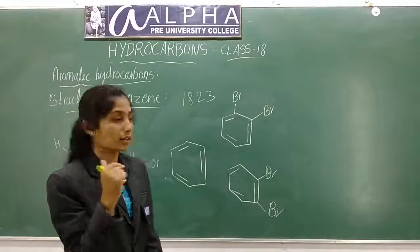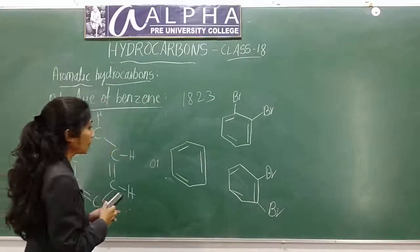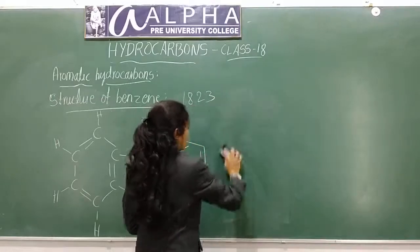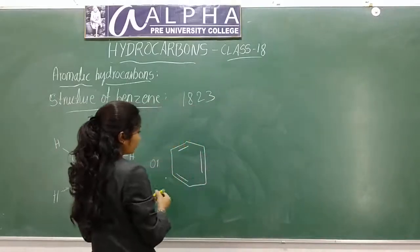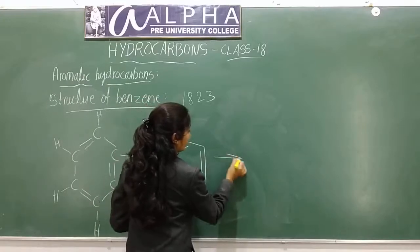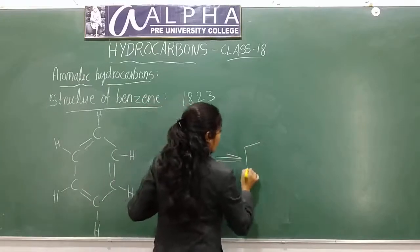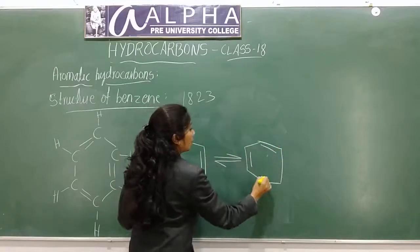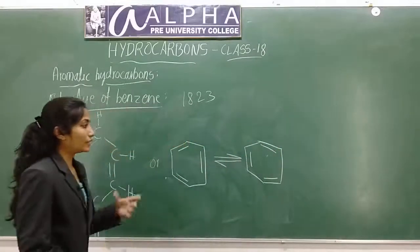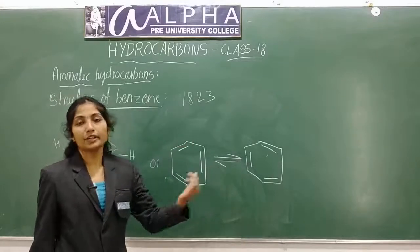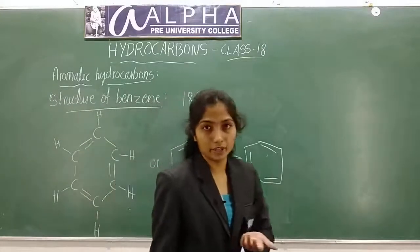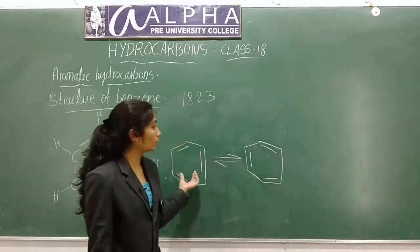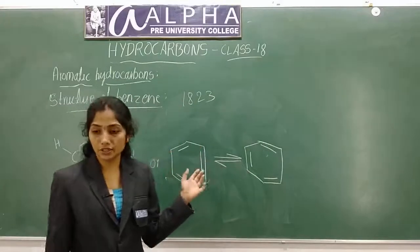Kekulé then said that benzene oscillates between two structures, called canonical structures. He said benzene oscillates between these two canonical structures — both are called Kekulé structures. Each has alternate double bonds, just shifted by one position.